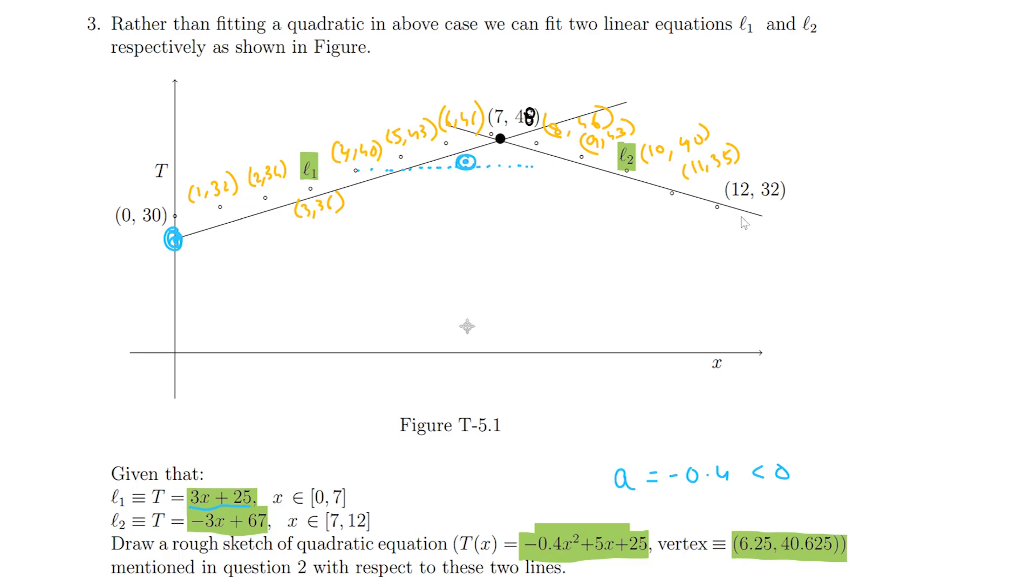And at x equals 12, we have minus 0.4 into 144 plus 60 plus 25, which gives us about 27.4.